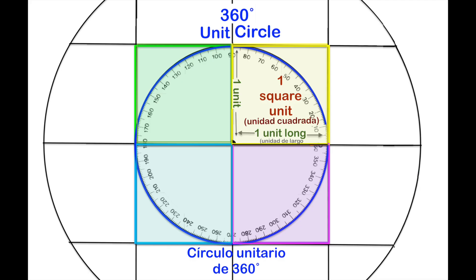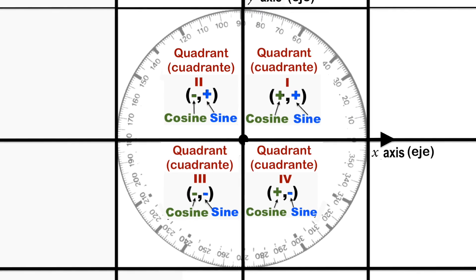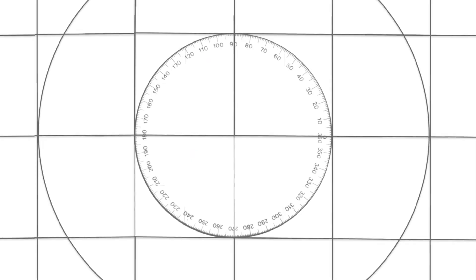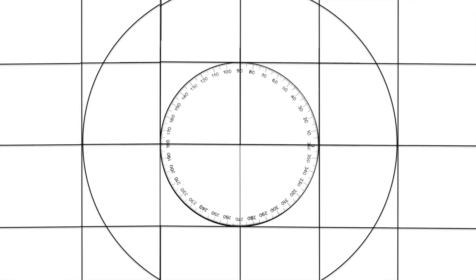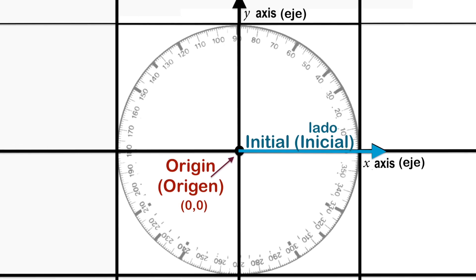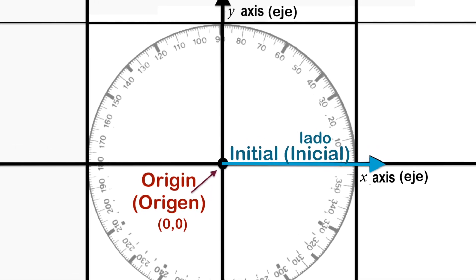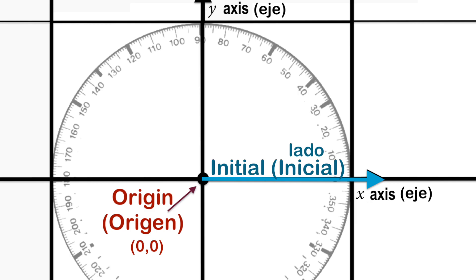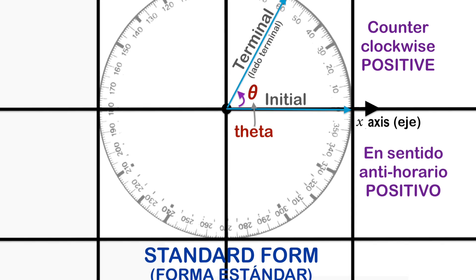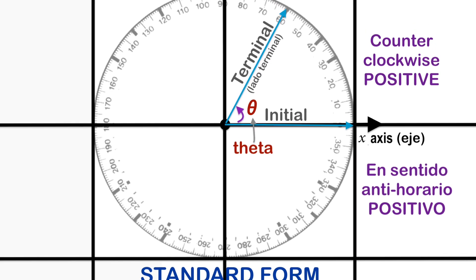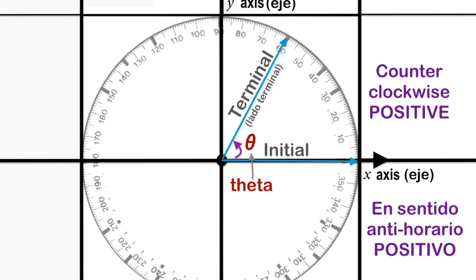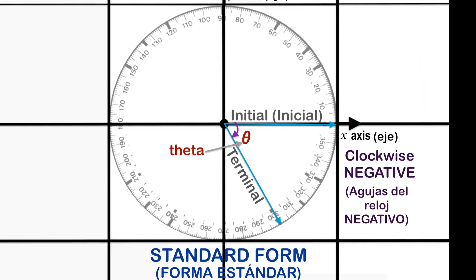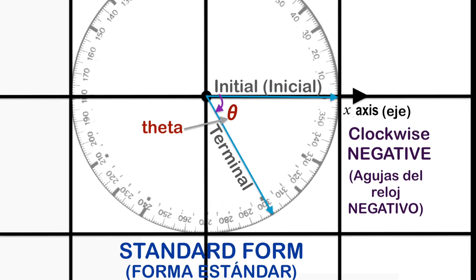A 360-degree unit circle is the foundation for the various functions in trigonometry. The initial location is on the positive side of the x-axis. The terminal segment opens counter-clockwise for a positive angle, while opening clockwise produces a negative angle.